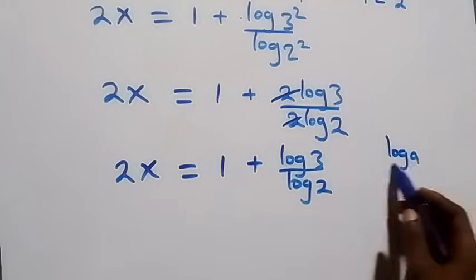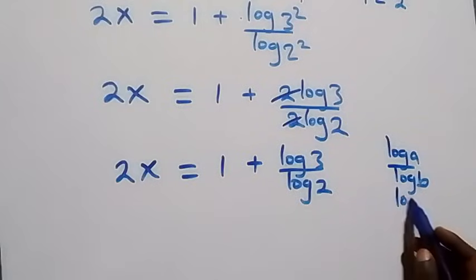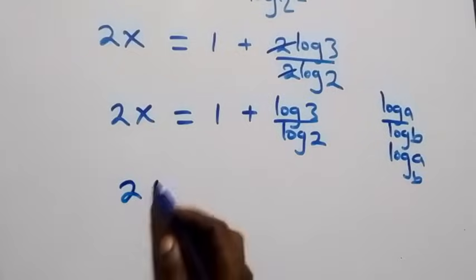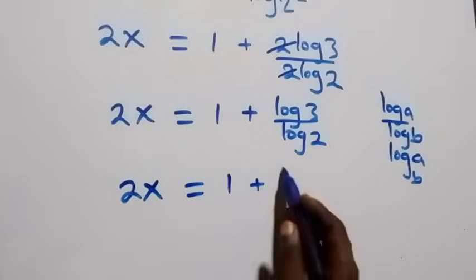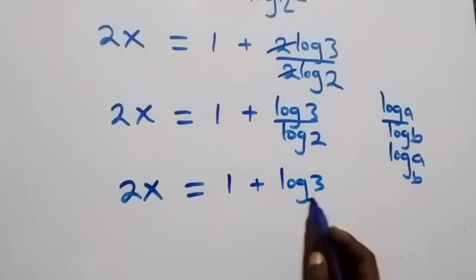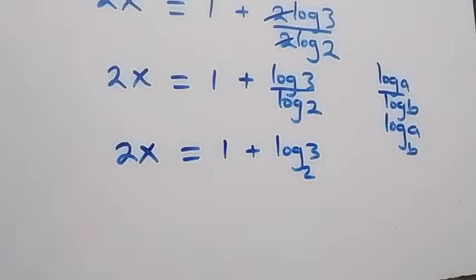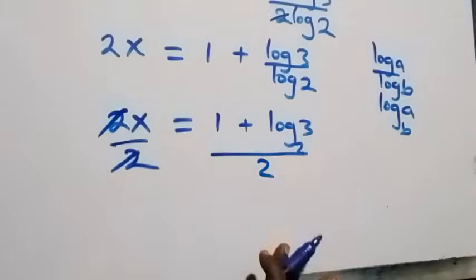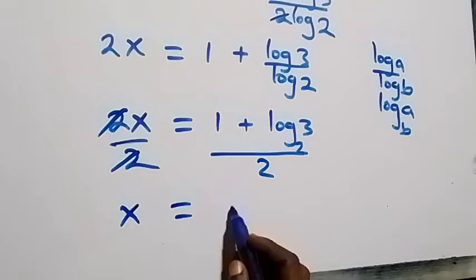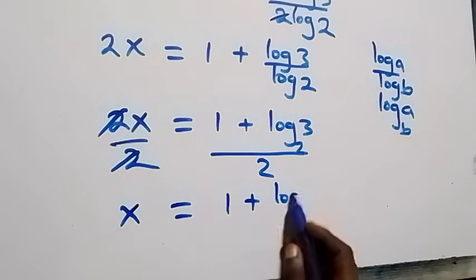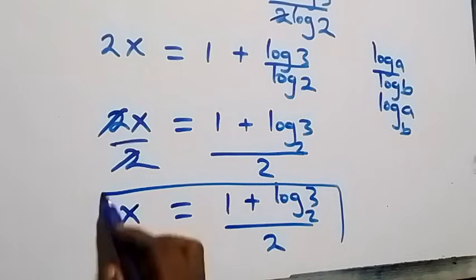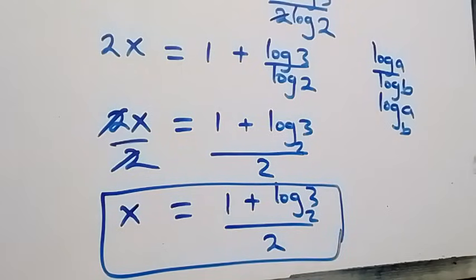Applying the change of base formula — log a over log b equals log base b of a — we get 2x equals 1 plus log base 2 of 3. Dividing both sides by 2, the 2s cancel and we have x equals (1 plus log base 2 of 3) over 2. This is the value of x for this problem.